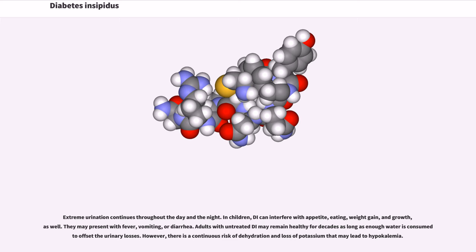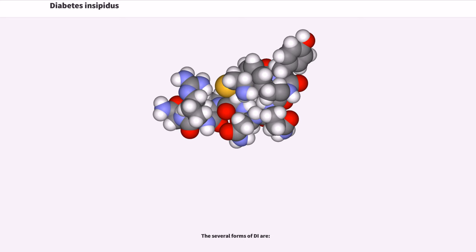However, there is a continuous risk of dehydration and loss of potassium that may lead to hypokalemia. The several forms of DI are: Central DI has many possible causes. According to the literature, the principal causes of central DI and their oft-cited approximate frequencies are as follows.